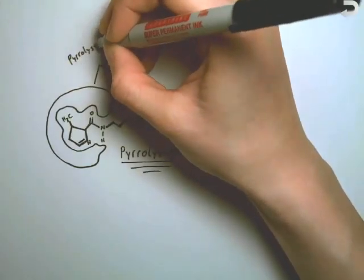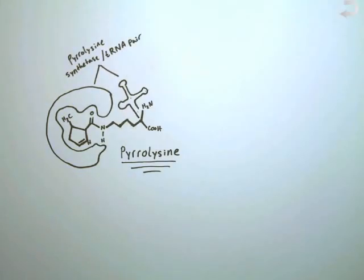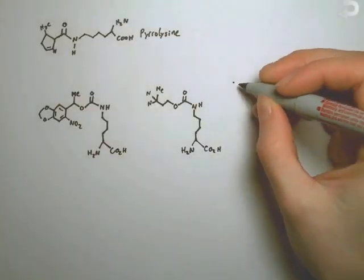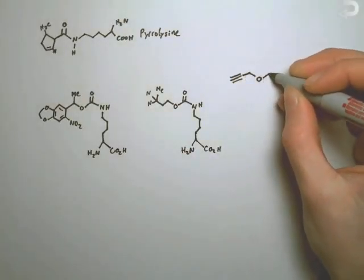Scientists were able to isolate the pyrolysine-synthetase tRNA pair and put them into E. coli. As it turns out, the pyrolysine-synthetase tRNA pair isn't too picky about what amino acid it binds to.